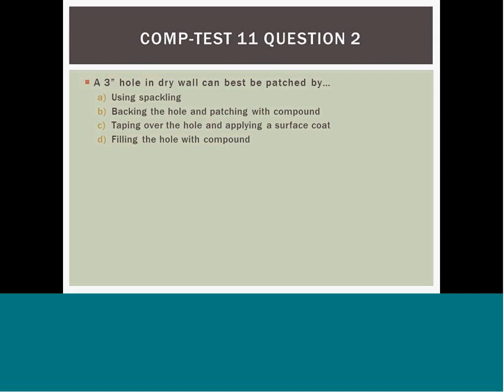Question 11: A hole in drywall can best be repaired by A) taping, B) taping the hole and patching with compound, C) taping the hole and applying a surface coat, or D) filling the hole with compound. Answer B is the best answer. In order to make sure that the repair is supported and does not fail, taping and patching with compound provides the necessary backing. Answer A can be used on much smaller holes, usually one inch or less. Answer C does not provide the backing support needed to hold the surface coat and will likely cause it to crack.